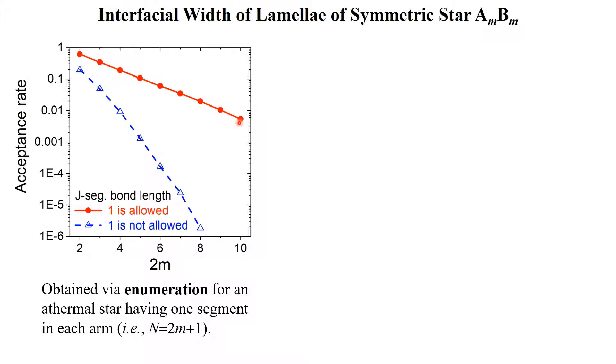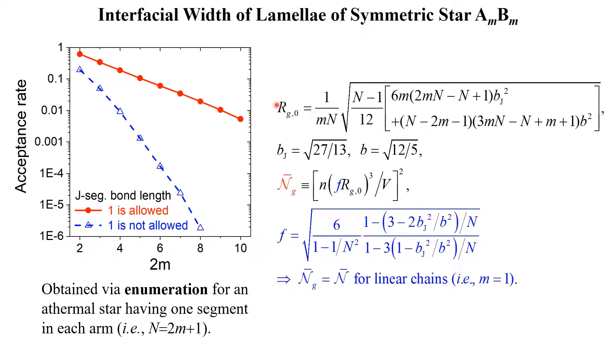As shown in this semi-logarithmic plot, our model can therefore be used for stars having up to 10 arms. We then use the root-mean-square radius of gyration of an ideal star chain Rg0 to define n-bar-g in a way that it is the same as n-bar for linear chains.